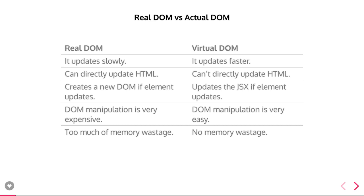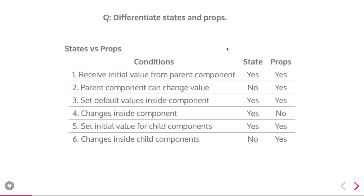The Real DOM is the object you see on the browser window and it updates slowly, while the Virtual DOM gets updated fast. The Real DOM directly updates the HTML, but the Virtual DOM does not update the HTML directly — it updates the JSX elements. The Real DOM creates and applies the DOM onto the browser. DOM manipulation on the Real DOM is heavy, which is what jQuery and other old frameworks were doing. With React, we use an optimized algorithm to apply manipulations on the Virtual DOM.